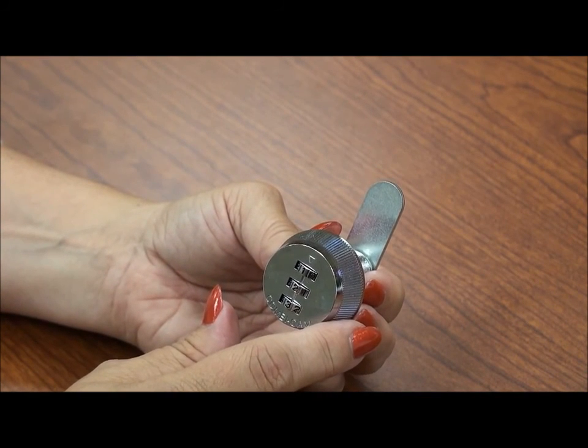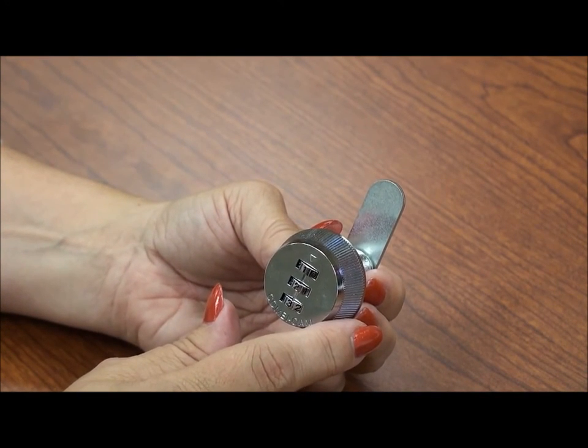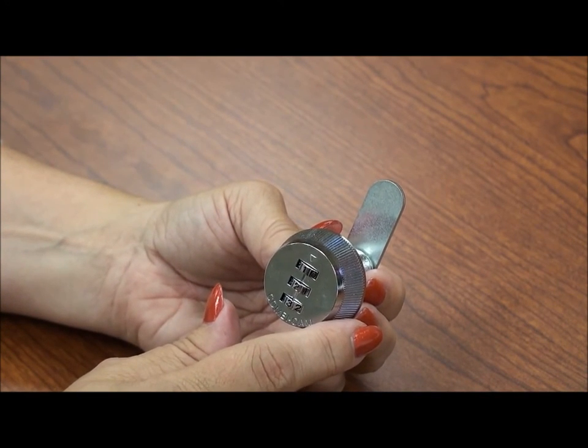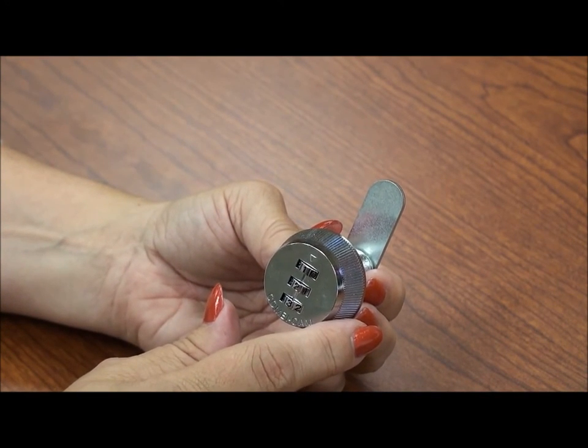Locate the change button on the bottom of the lock and using the straight end of the paper clip, push in the change button on the bottom of the Combicam.